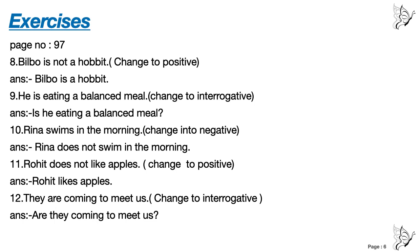Number ten: Reena swims in the morning — change to negative. No helping verb; main verb 'swims' has 's', so use 'does'. As it is negative, add 'not': Reena does not swim in the morning. Number eleven: Rohit does not like apples — change to positive. When we remove 'does not', 'like' changes back to 'likes': Rohit likes apples. Remember, when the sentence is positive with 'he/she/it', the main verb takes 's'.